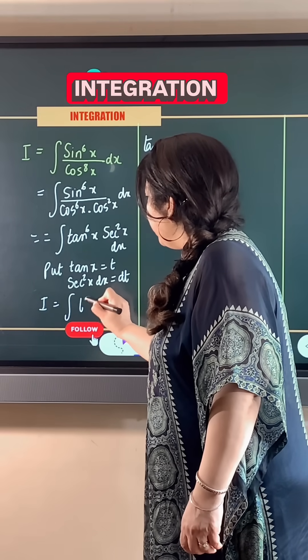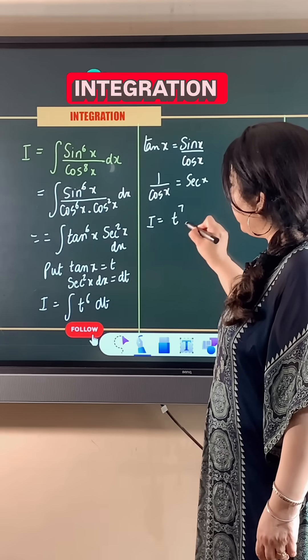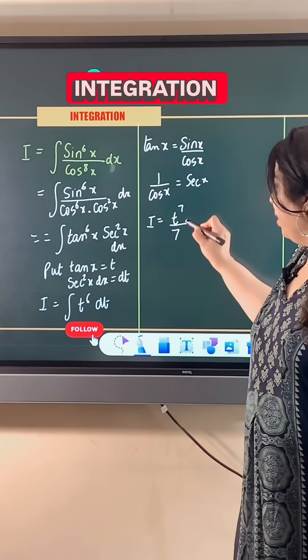So, our integral becomes t raised to power 6 dt. On taking the integral, this becomes t raised to power 7 divided by 7 plus c.